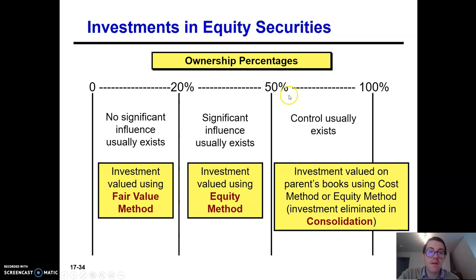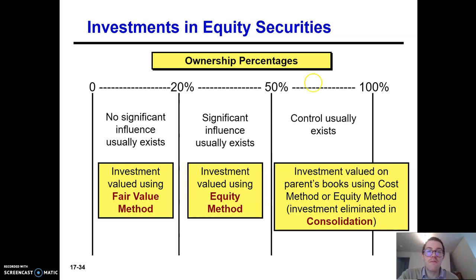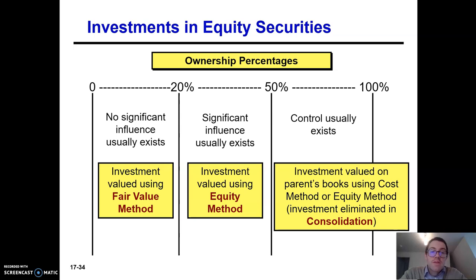At the extreme, when you have between 50 and 100% of that corporation's stock, you have control. If you have 50.01%, no one else really needs to vote — whatever you say goes on the board. You have that control. In that case, you're the parent company, the other company is the subsidiary, and the investment is generally accounted for using consolidated financial statements.